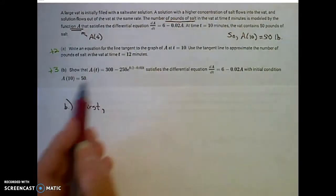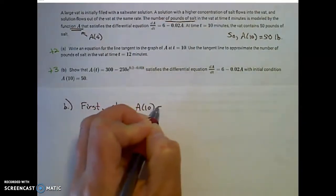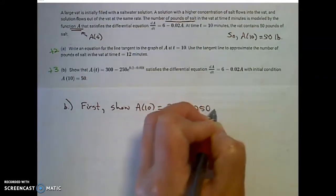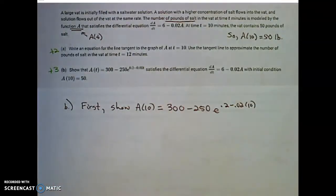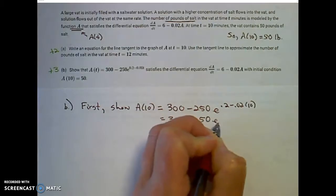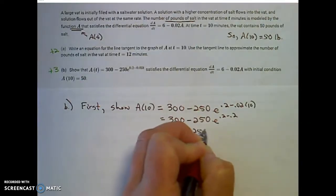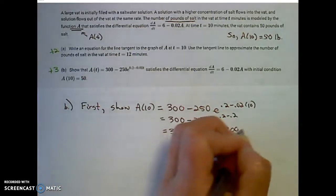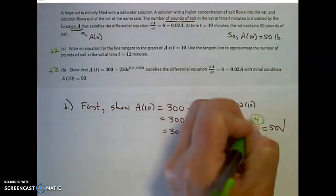Let's verify the initial conditions are met with that function. If I plug in t=10, that gives 300 minus 250e^(0.2 minus 0.02 times 10), which is 300 minus 250e^(0.2 minus 0.2), which is e^0, which equals 1. So that's 300 minus 250 times 1, which is 50. The initial conditions are met, and you earn a point for showing that.